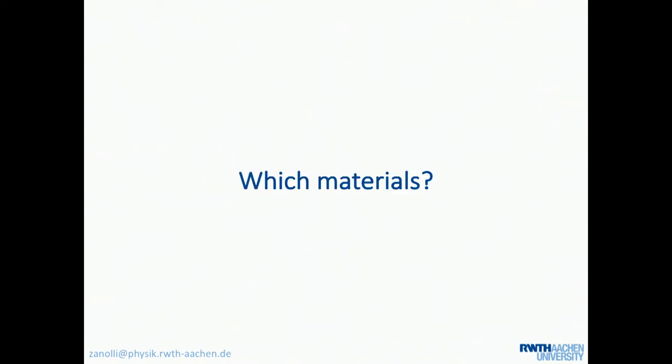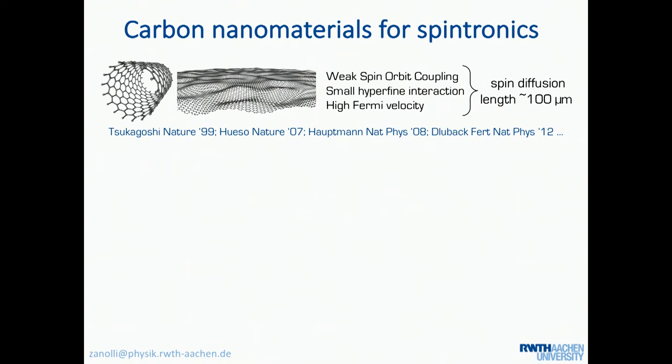So, which materials? The first point is you have to choose your candidate materials to do the work. And we start with carbon, which has the big advantage of having a very long spin diffusion length. This is intrinsic in carbon. It's because the atomic number is small, like six. But the problem is carbon is not magnetic, and if you take a perfect carbon nanotube or a perfect graphene sheet, there is no magnetism in that. So, you have to do something. You have to functionalize the system somehow.